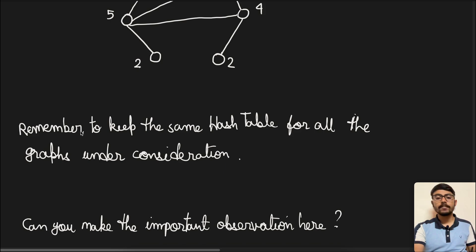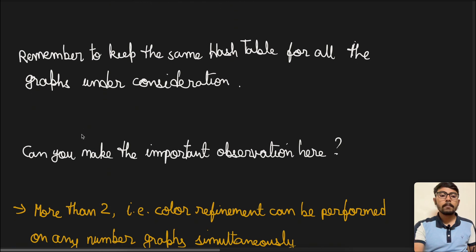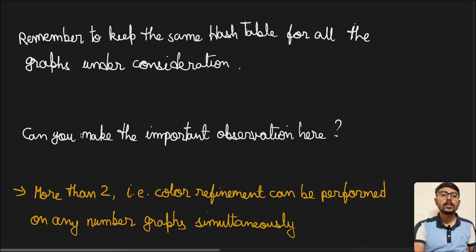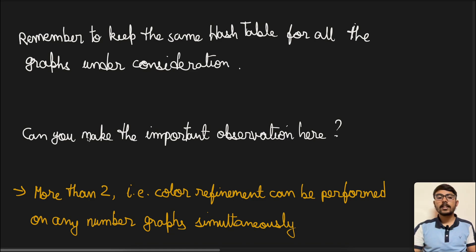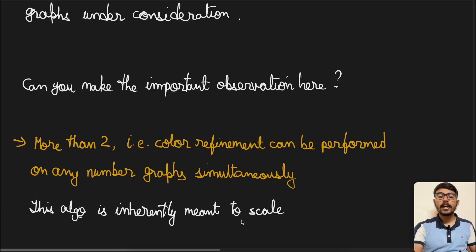An important observation here is that color refinement can be performed on any number of graphs simultaneously. This algorithm allows us to take in multiple graphs, perform color refinement on them together, and then determine whether they are similar. This has been very efficient for handling a large number of graphs, so the algorithm is inherently designed to scale.